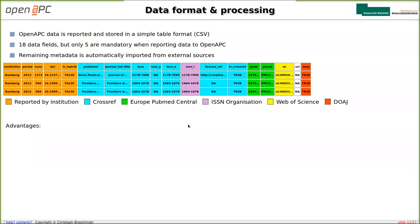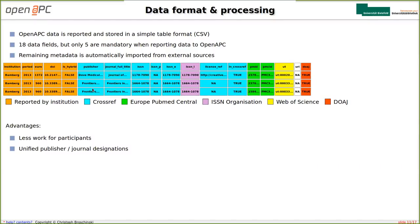Using this scheme of metadata enrichment has a lot of advantages. First, it's much less work for participants — they only have to report those five fields, and all others are left to us. Very importantly, importing metadata from Crossref leads to unified publisher and journal designations — we always have the same journal title and publisher names for the same journals. A third aspect is that corrections can be applied retroactively, if we just run this enrichment process again for articles already in our database.